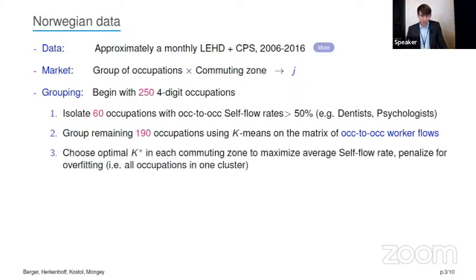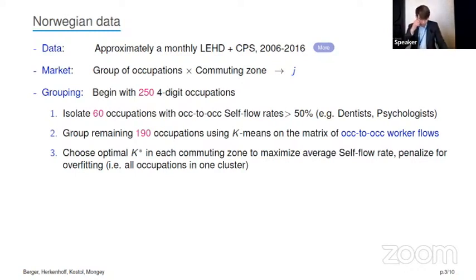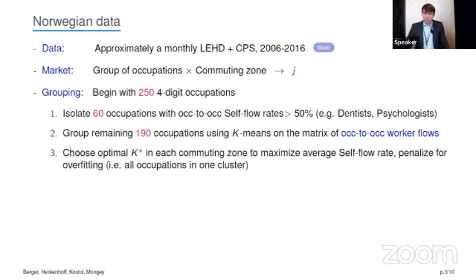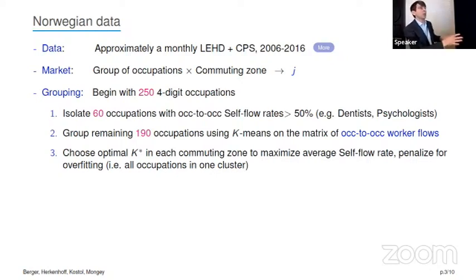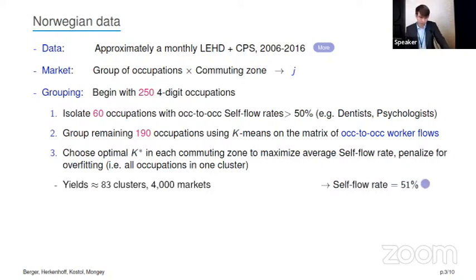We come up with an optimal K-star in the spirit of machine learning clustering algorithms. We pin down an optimal K-star in every commuting zone — so it'll be a separate K-star in Oslo, Bergen, or Stavanger — to maximize goodness of fit by maximizing the average self-flow rates, while also penalizing for overfitting. We want to rule out the degenerate solution of sticking all occupations into one cluster.